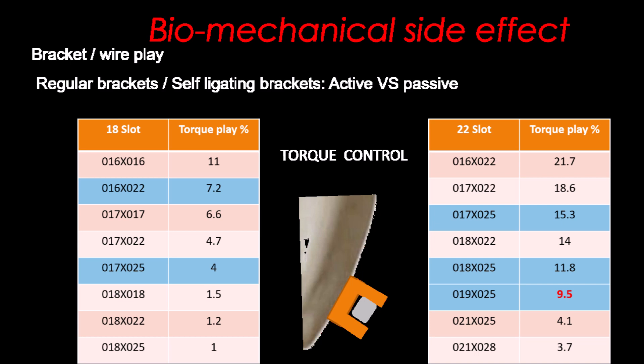A biomechanical side effect: play is one of the major components in biomechanics and has an important impact on the resulting tooth movement and final position. For example, a 0.019 by 0.025 stainless steel wire in a 0.022 by 0.028 inch slot will suffer a minimum of 9.5 degrees of play, meaning a loss of 9.5 degrees of system torque. For instance, an MBT prescription of 17 degrees in the upper incisors will present only 7.5 degrees of torque finally. This value can change according to bracket type, ligation, wire and other parameters.